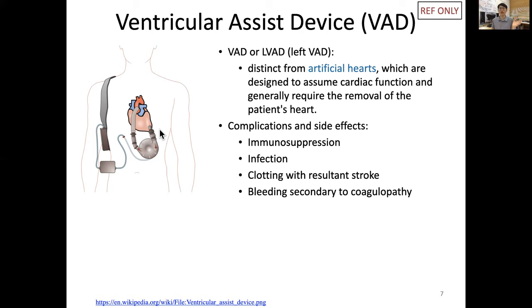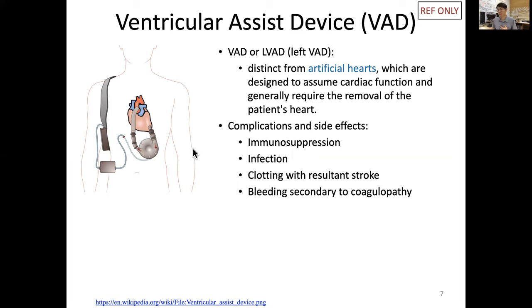When a patient is waiting for a total heart transplantation with this device, several complications can arise. This large biological material inside the body causes the immune system to try to reject it, requiring immunosuppression drugs that reduce natural immune activity. This in turn raises the risk of infection. Additionally, the electrical wire passing through the skin also raises infection risk.